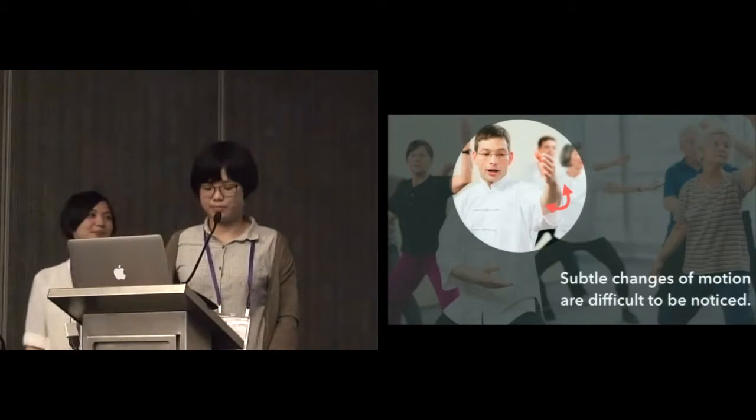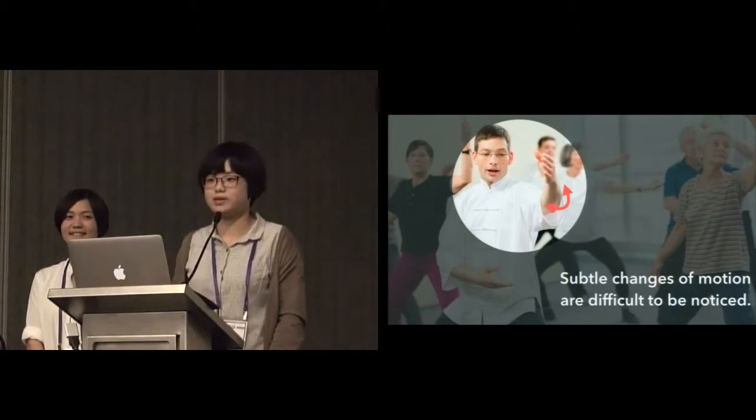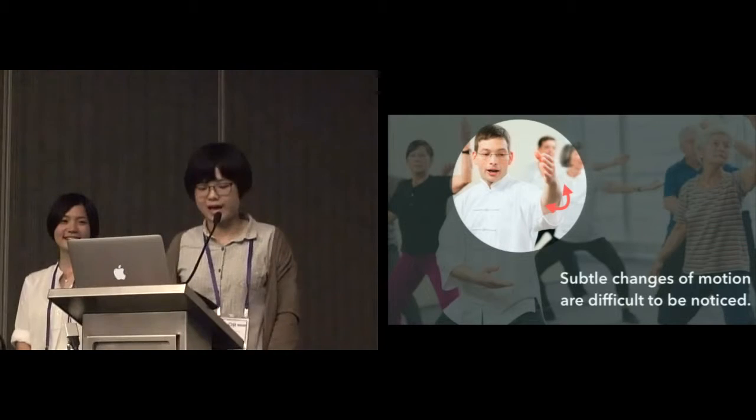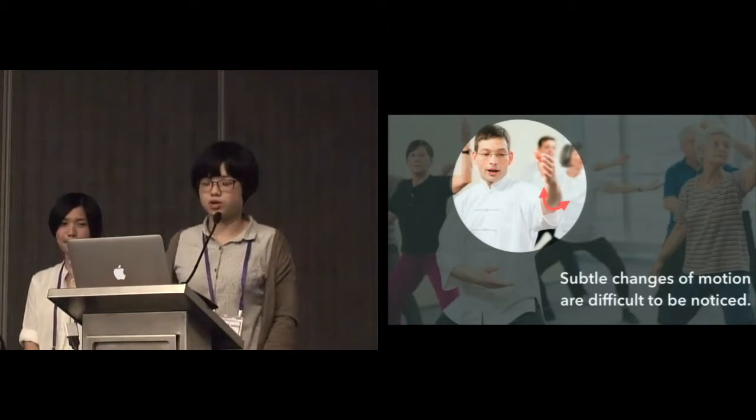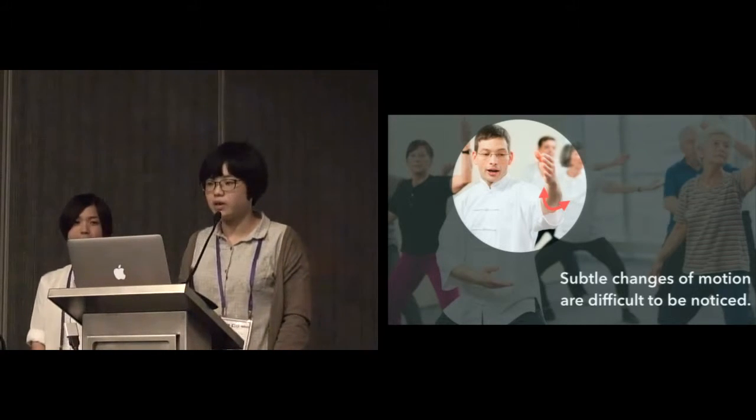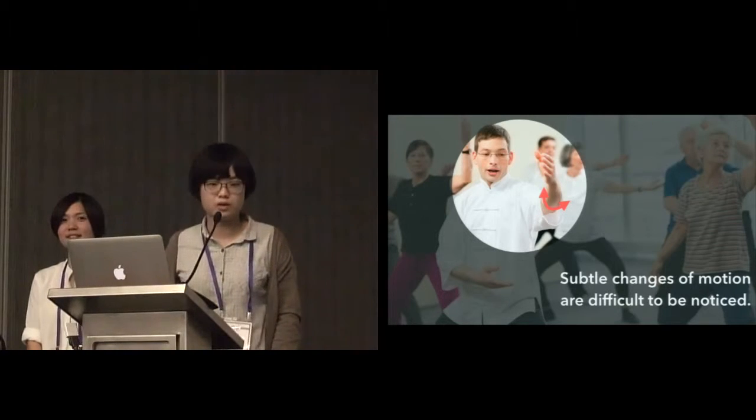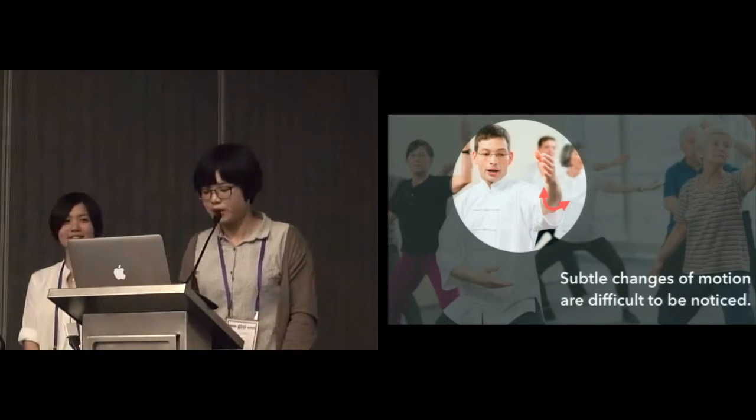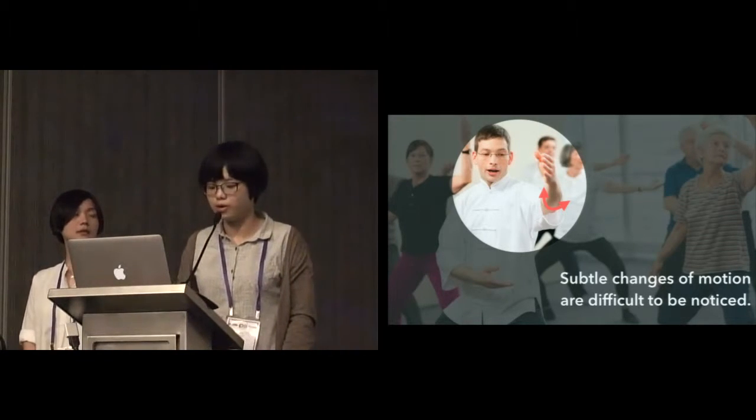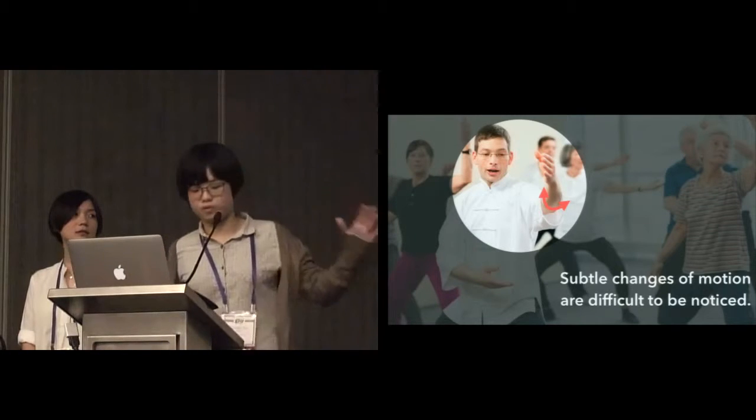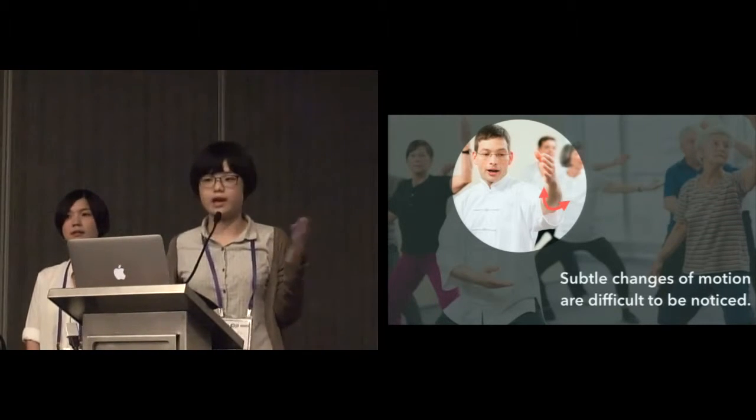This points out the problem that by giving only visual instructions, sometimes it's difficult to notice the subtle change of motion. Let's take Tai Chi for instance. The internal rotation and external rotation of the forearm is a kind of subtle change that is relatively difficult to be noticed when watching the video. However, this subtle but important changes are what people are more likely to neglect. For example, forearm rotation is a crucial part in exercises such as Tai Chi.